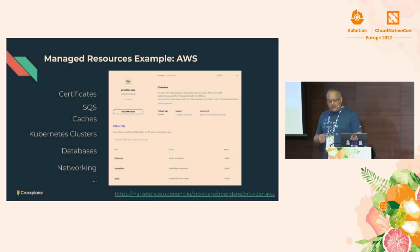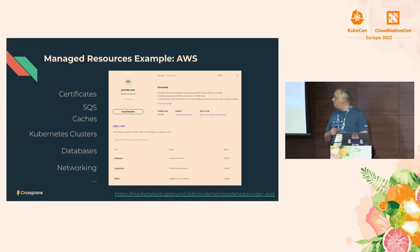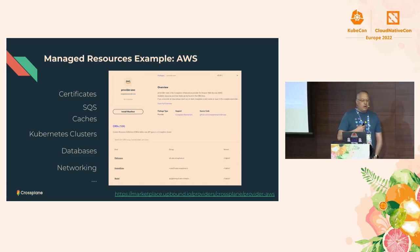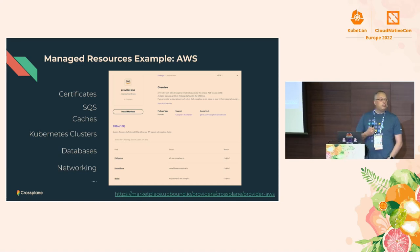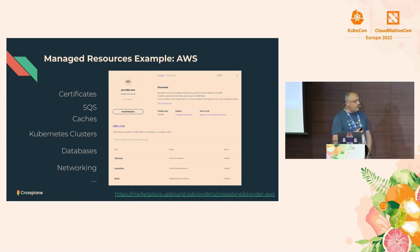In the case of AWS, there are hundreds of things you could configure — certificates, queues, EKS clusters, databases, and networking. Our goal with this project is: can we manage these resources using Kubernetes and all the tooling you have, like GitOps tooling and validation webhooks?